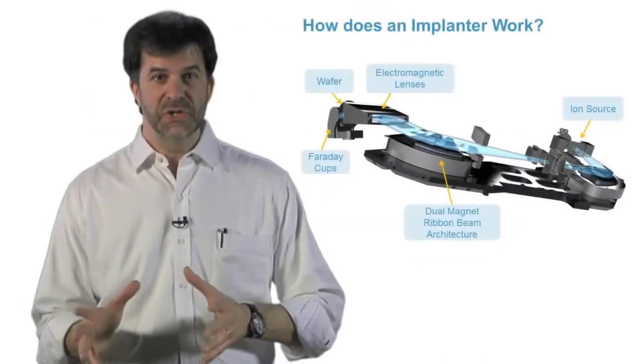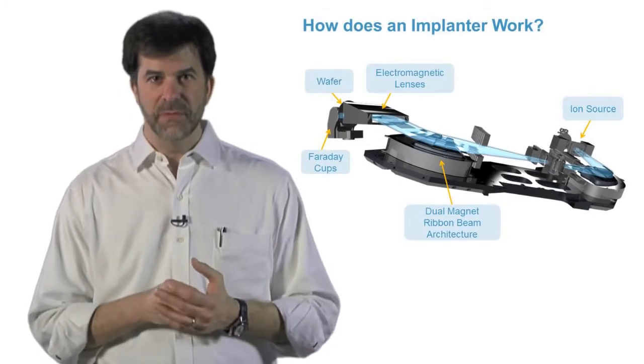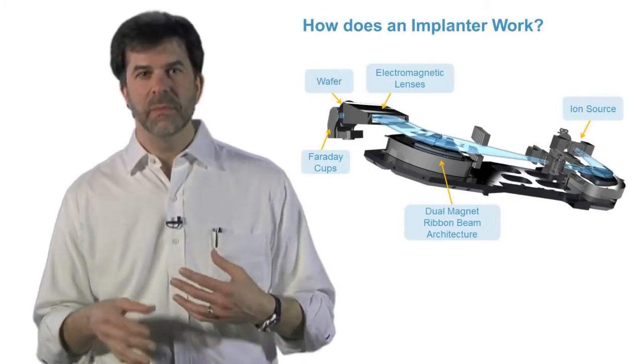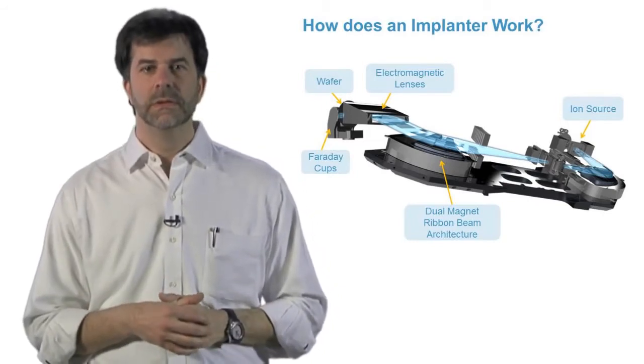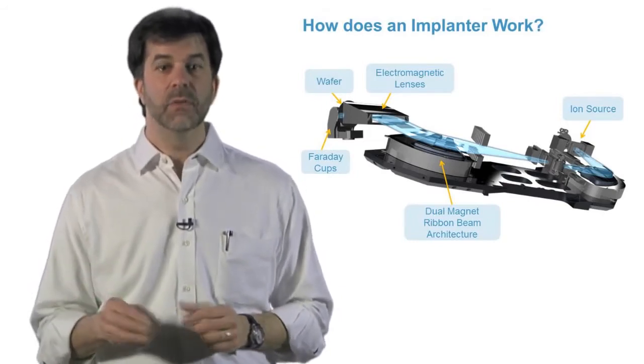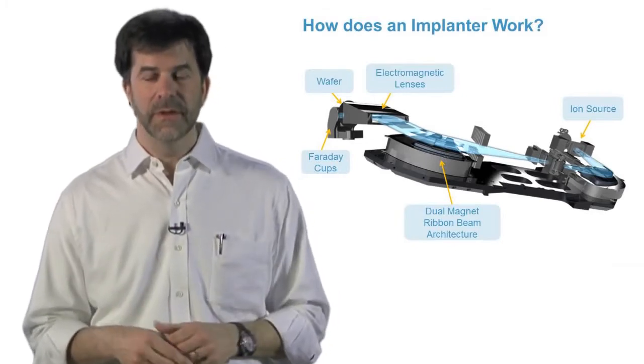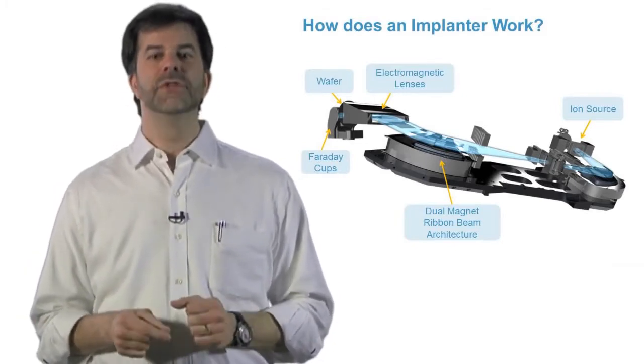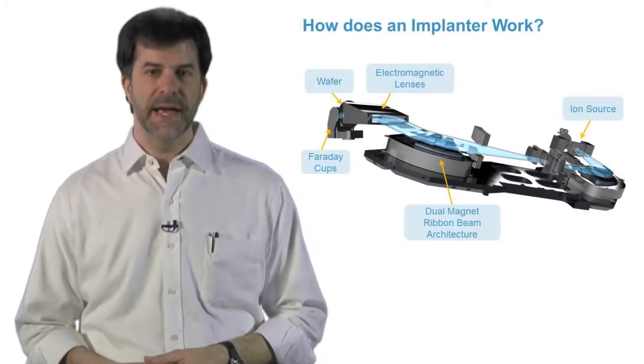The ion source gets the whole thing started. We first introduce a gaseous material into the source chamber from either a gas bottle or by heating up a piece of solid material that has been placed in the source. Once we have gas in the chamber, we strike a plasma by generating secondary electrons from a heated filament. By applying a high voltage to the chamber, a plasma is formed, which is a cloud of ionized gas.